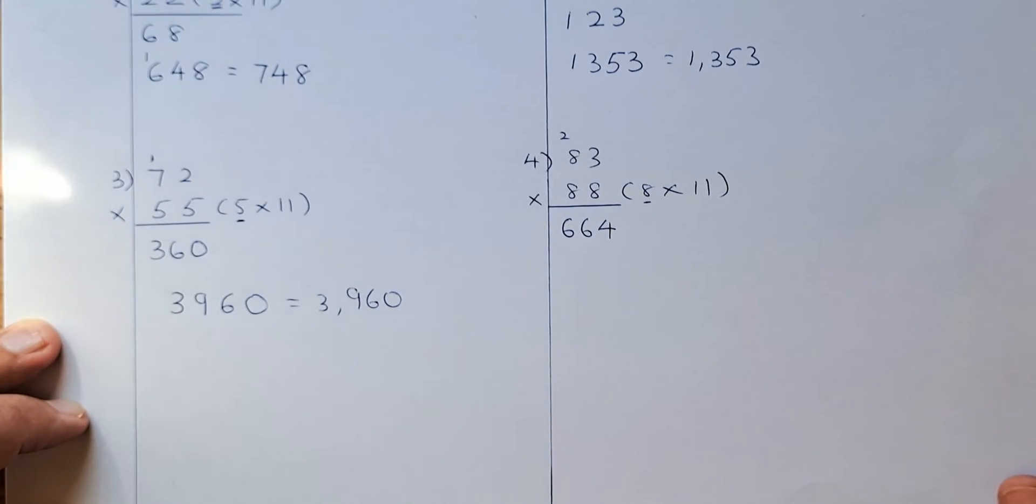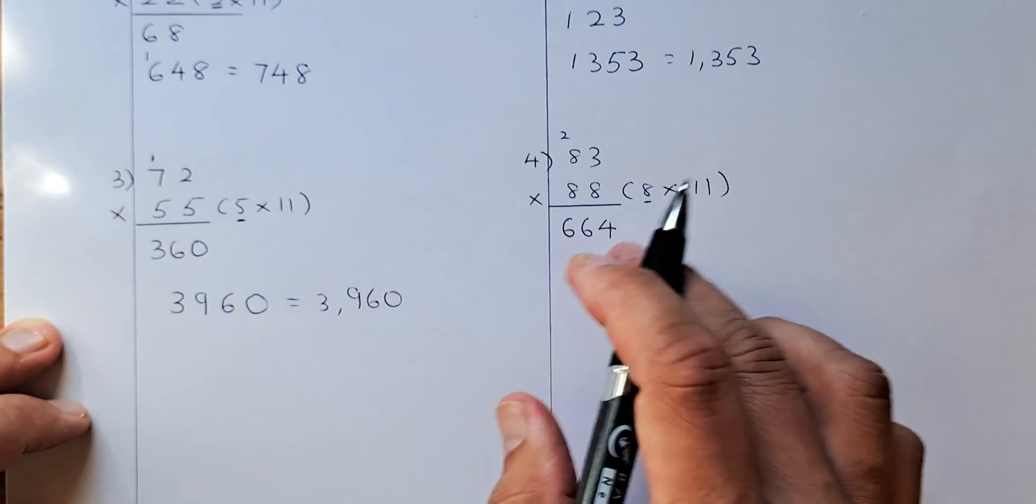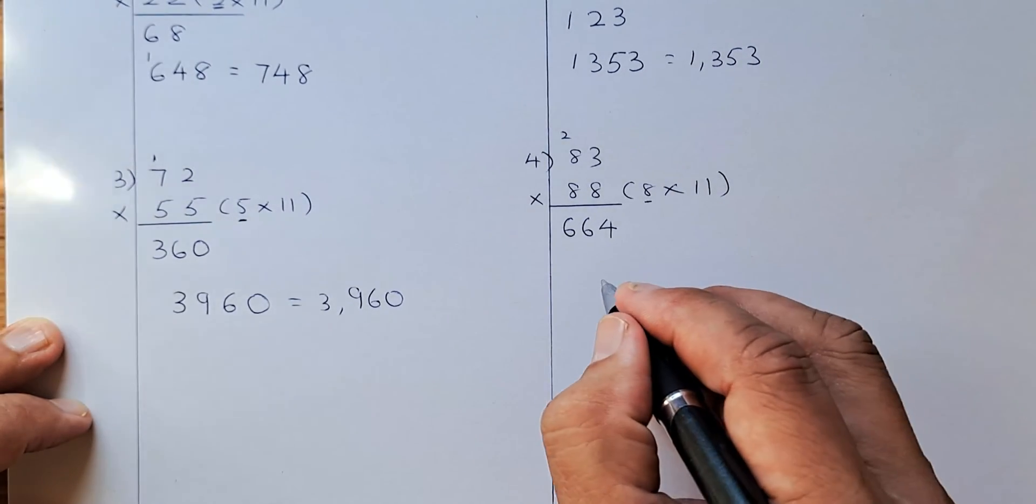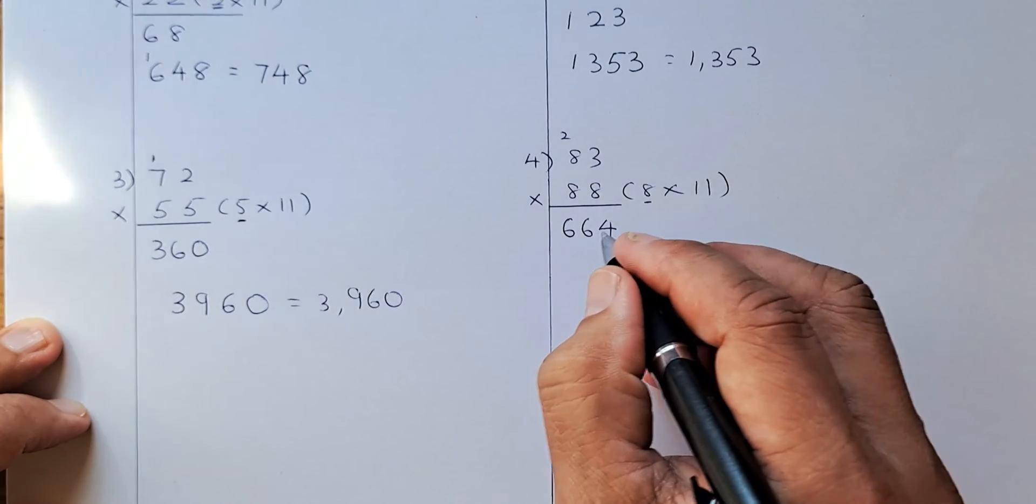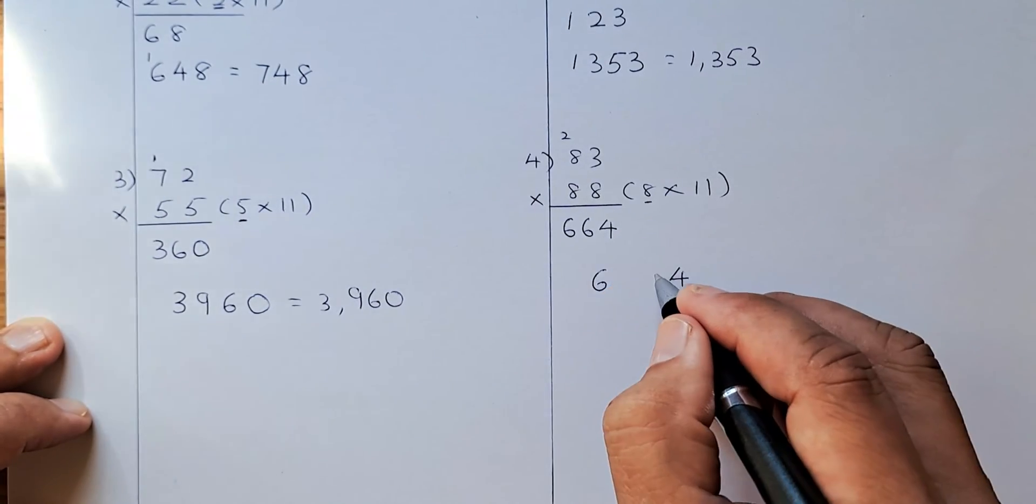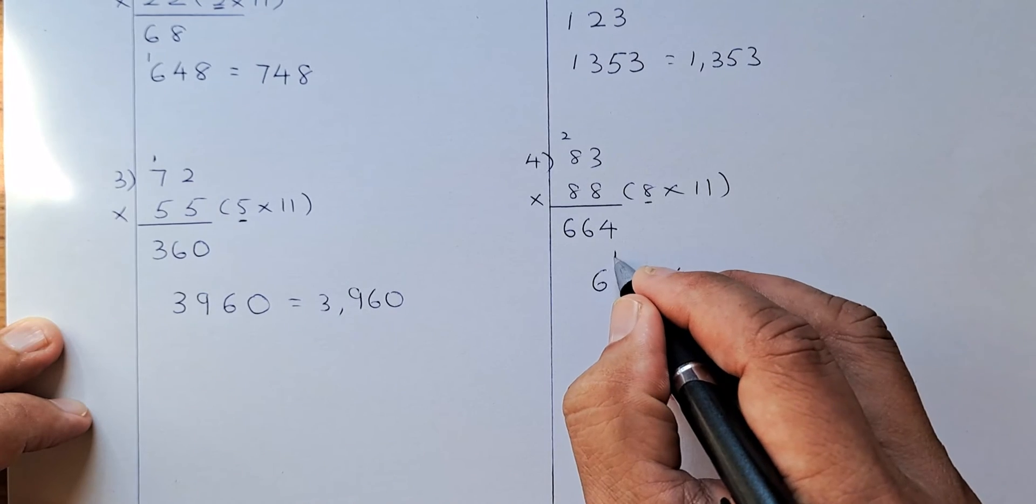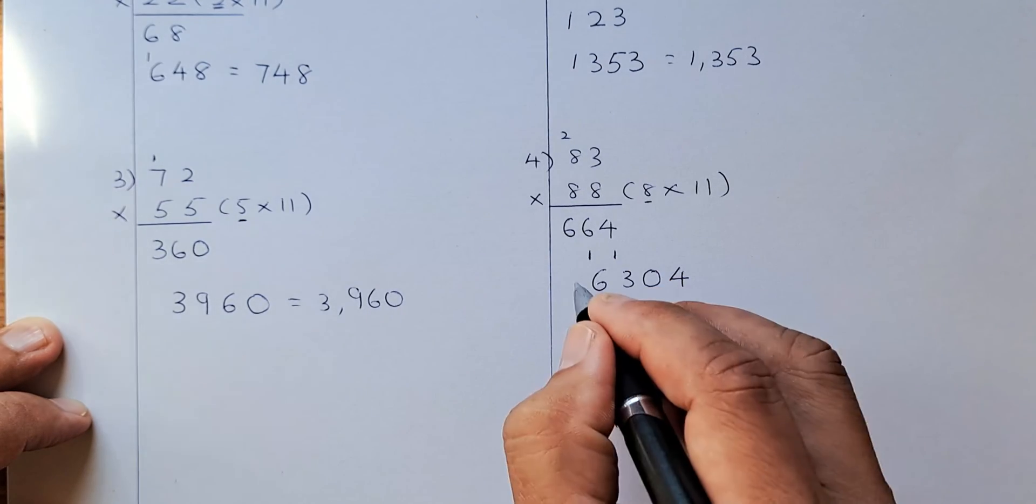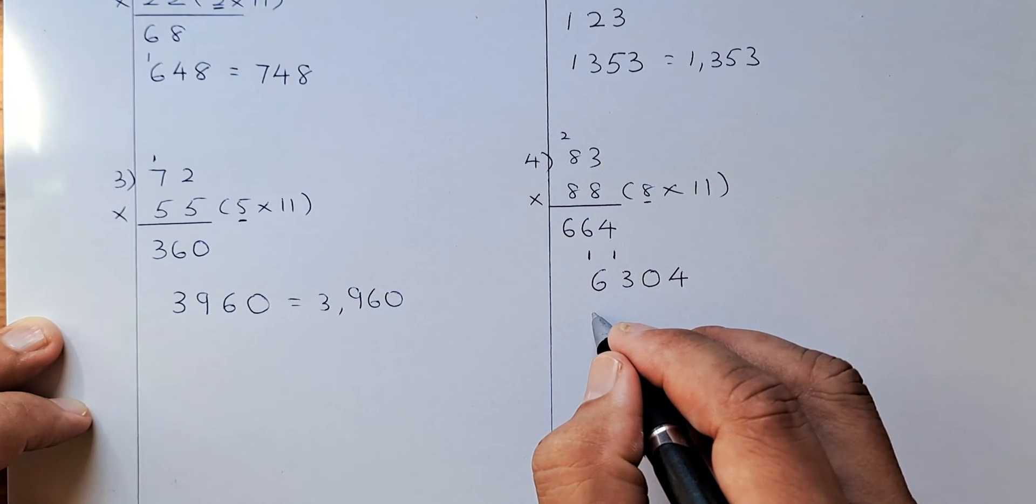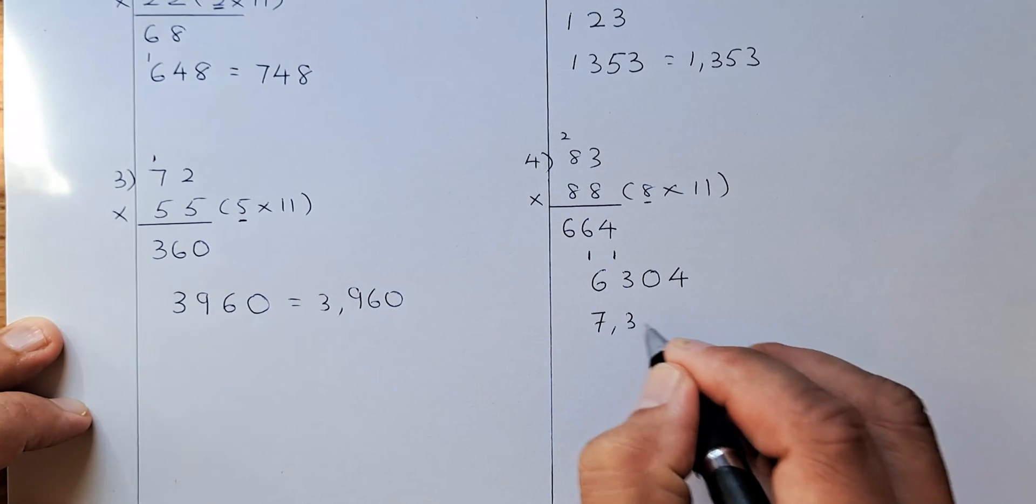And then the next step, you are going to multiply 664 by 11. So to do that, 6 remain, 4 remain. And then you add the numbers in between. 6 plus 4 is 10. 0 carry up 1. 6 plus 6 is 12. Plus 1 is 13 carry up 1. And add them up together, it is going to be 7304.